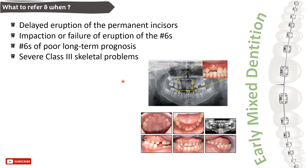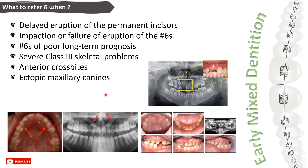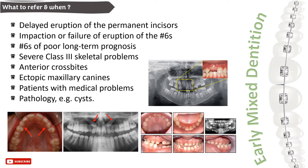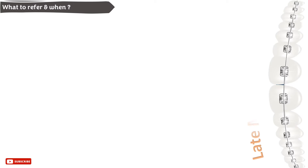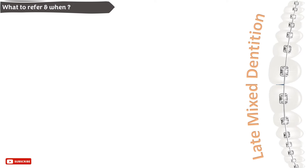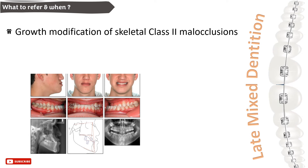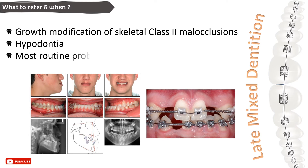Additional referral conditions during early mixed dentition include molars of poor long-term prognosis, severe Class 3 skeletal problems, anterior crossbites, ectopic maxillary canines, and patients with medical problems or pathology. Growth modifications of skeletal Class 2 malocclusions, hypodontia, and most routine problems should be referred to an orthodontist during the late mixed dentition.